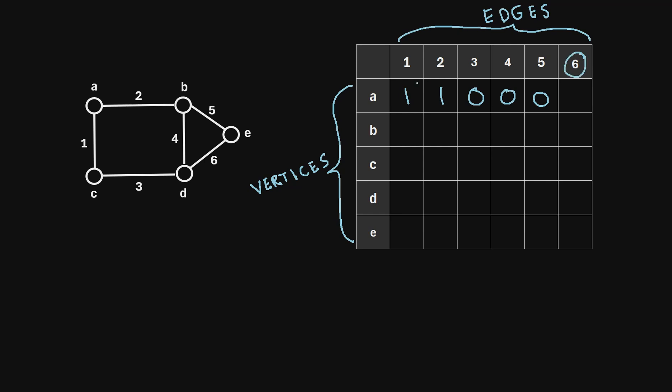And then lastly, is edge 6 incident with vertex A? It is also not, so we'll also give it a 0. And we're just going to repeat this process with the remaining vertices and fill in the rest of this matrix.